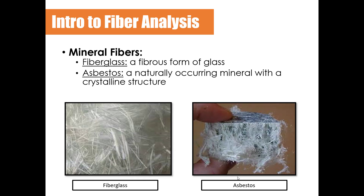We also have mineral fibers, which are a type of natural fiber. Examples include fiberglass, which is a fibrous form of glass used in construction — things like ceilings, ducts, roofing materials, and insulation can be made of fiberglass. You also have asbestos, which is a naturally occurring mineral with a crystalline structure. It's used in a lot of building materials, vehicle components, and many manufactured goods.